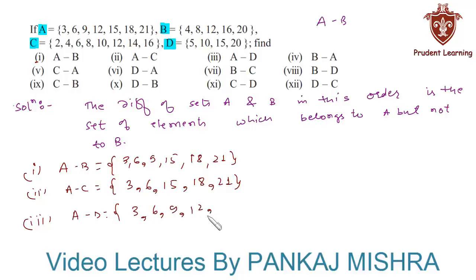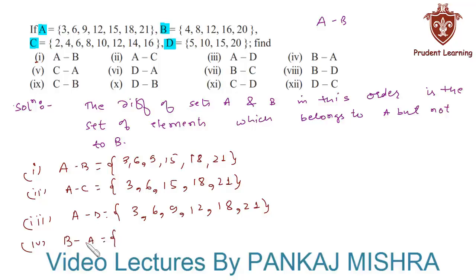Next we have to find B minus A, that is all the elements that are in B but not in A. Here we can see that 4, 8, 16 and 20 are present only in B and not in A.